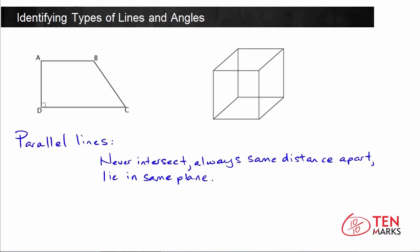Take a look at the trapezoid on the left. Can you find any parallel lines? Another thing about parallel lines is that they're always the same distance apart. So when you look at this figure, you can see that line AB up here is parallel to line DC. They're always going to be the same distance apart. They lie in the same plane and they will never, ever intersect.